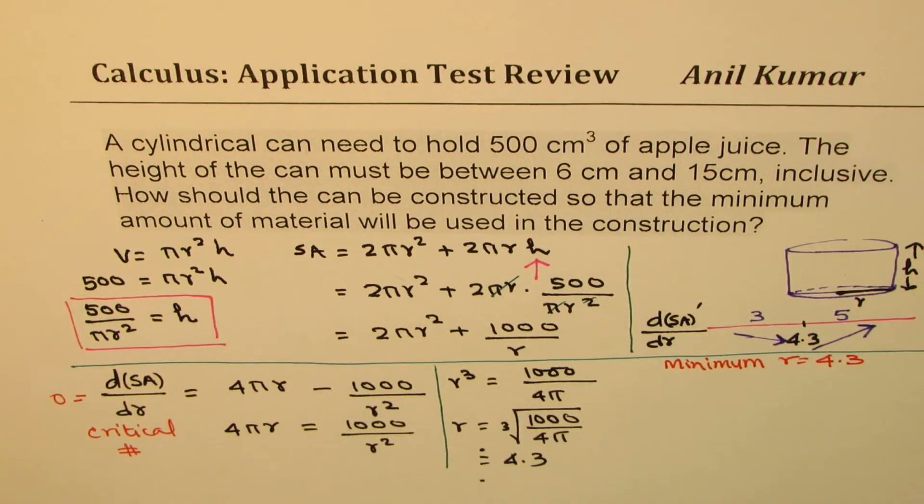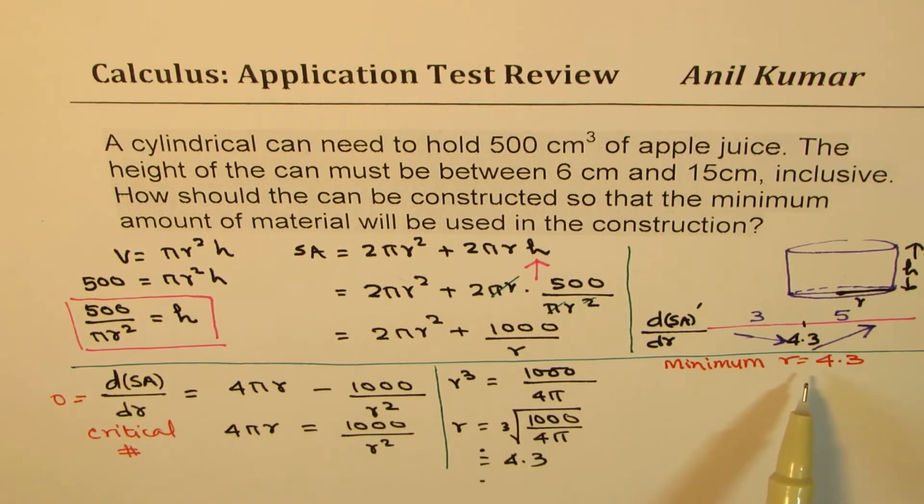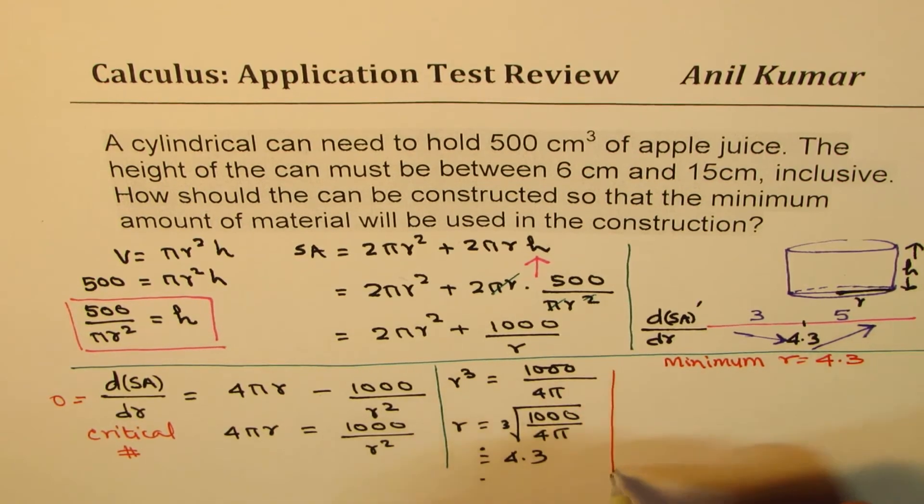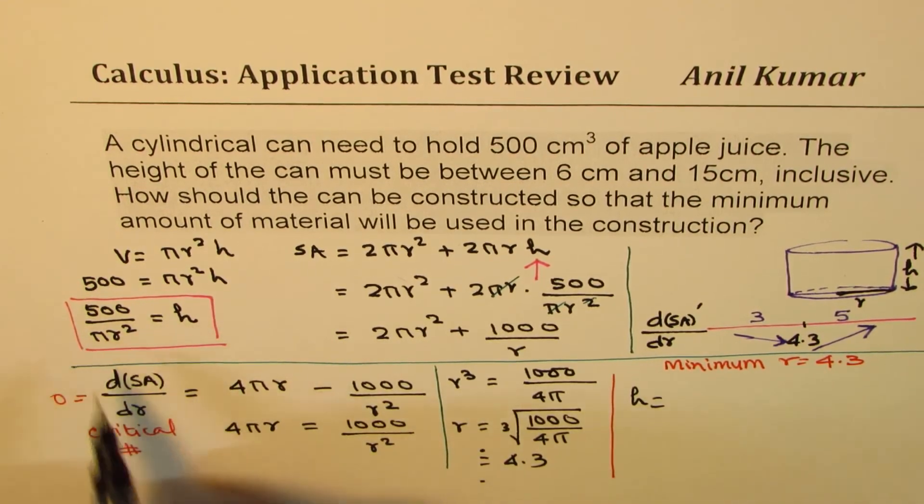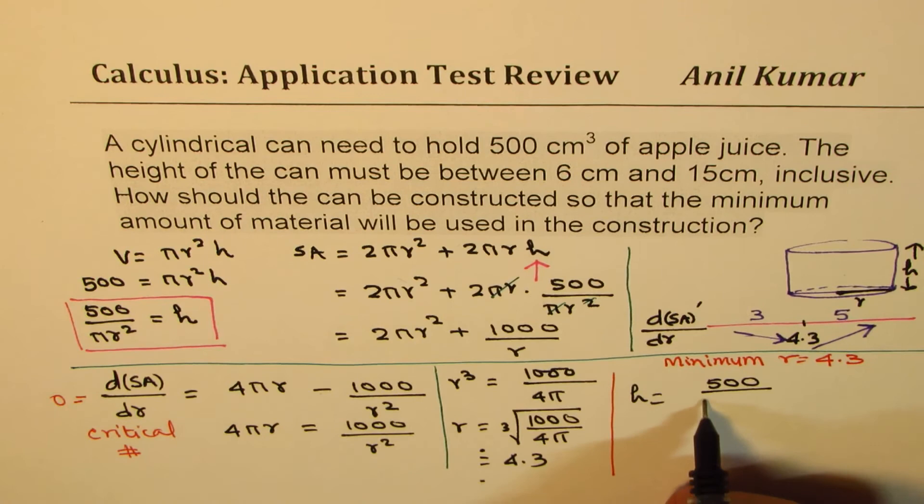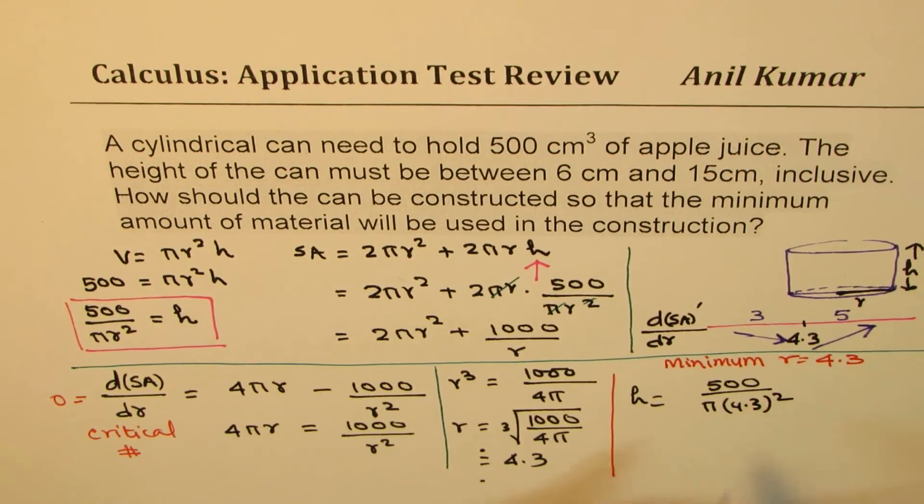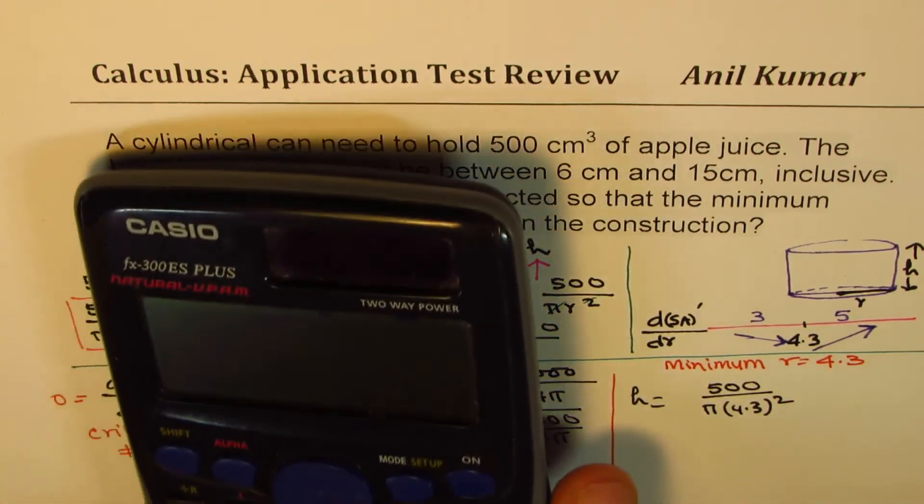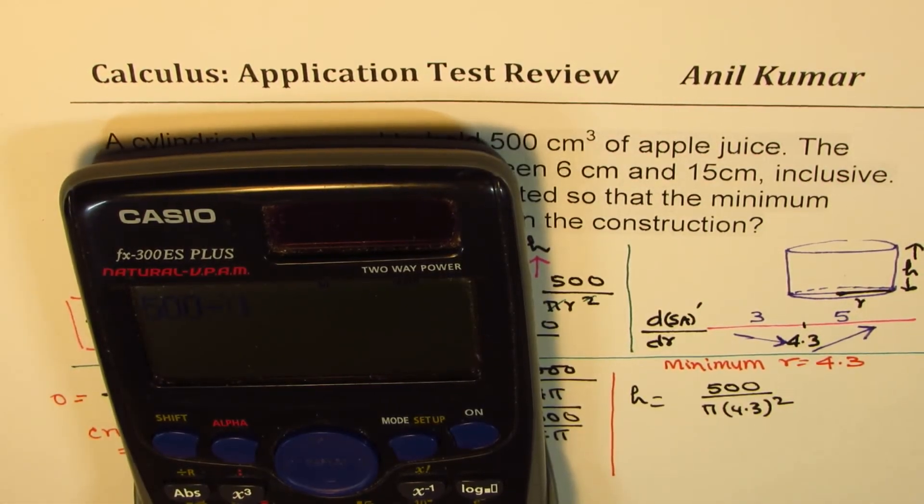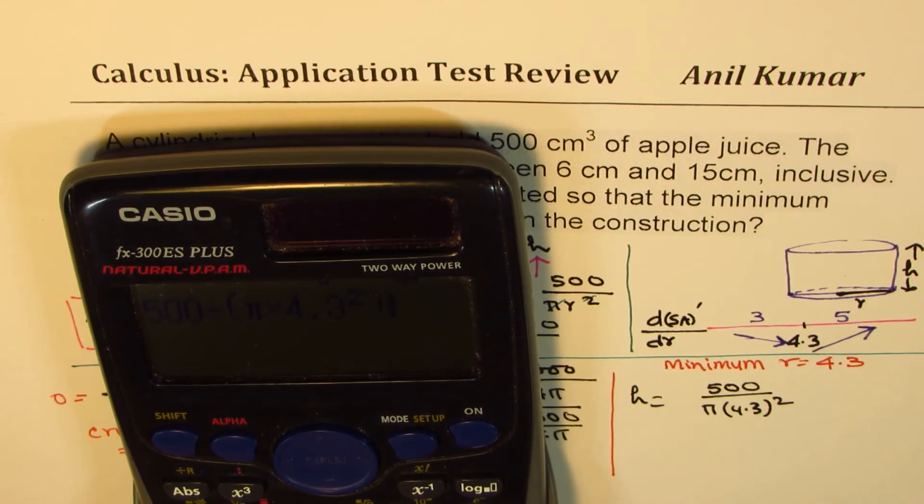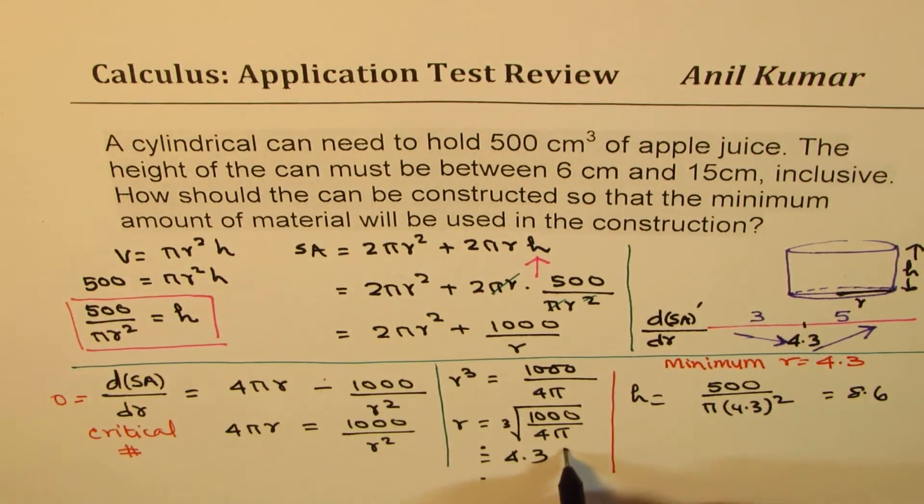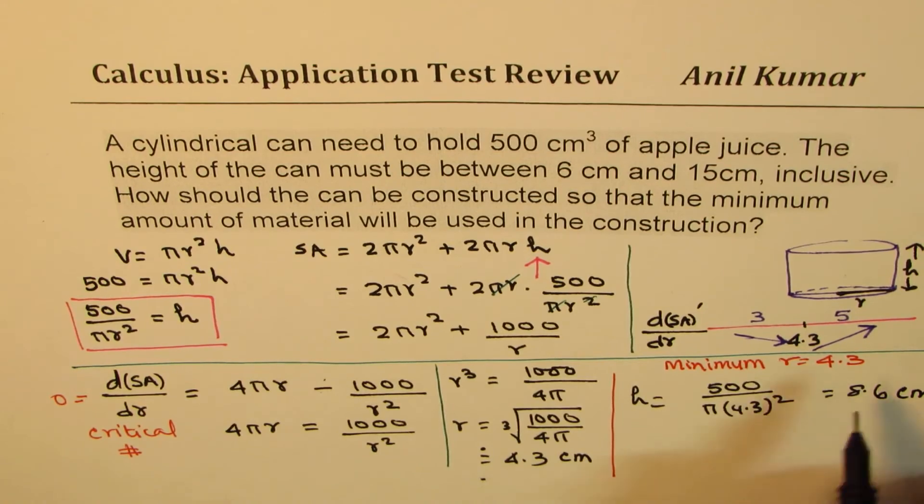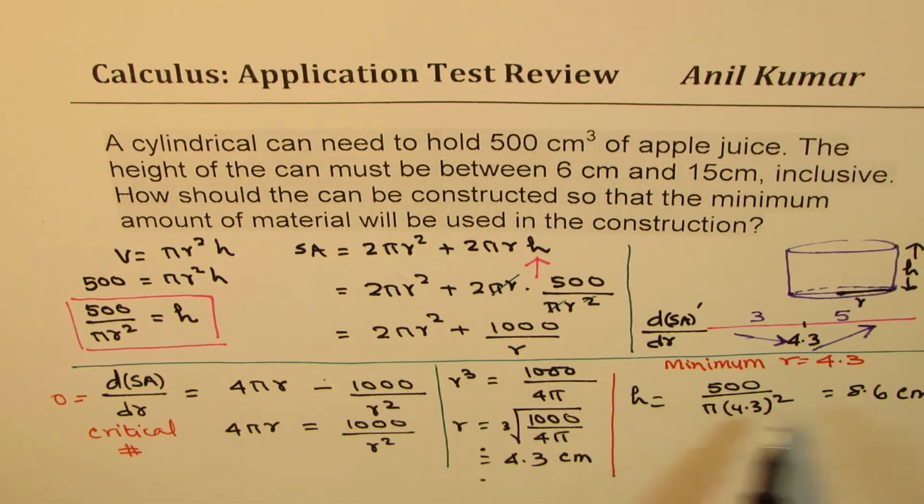So we do have a minimum in the given domain r equals to 4.3. So let's also calculate the height if that is permitted. So height for radius of 4.3 is from here 500 over π times 4.3². So let's calculate how much we get. So we have 500 divided by, within brackets, π times 4.3², equal to 8.6. Units are centimeters.